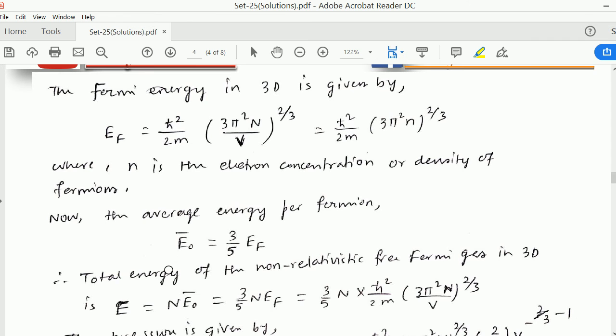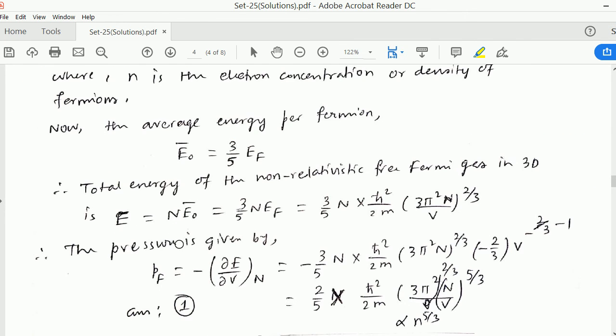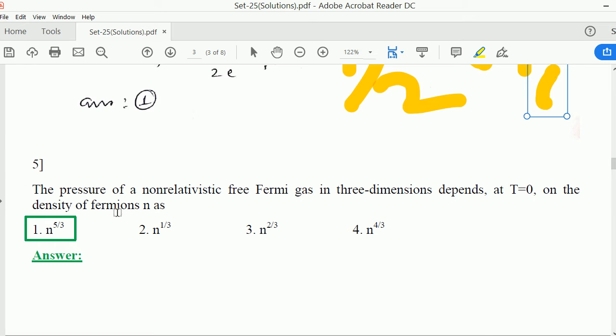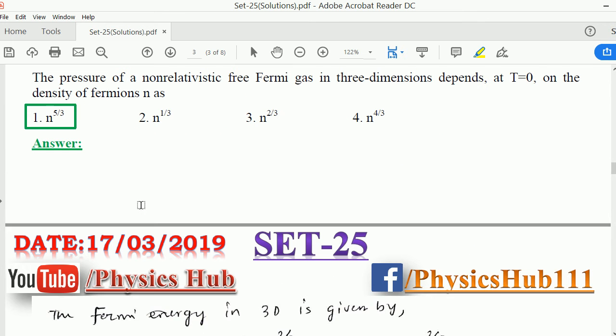Where N is the electron concentration, we consider it as density of fermions. The average energy for fermions at zero temperature is 3/5 times EF. Then the total energy is N times 3/5 EF. Pressure is given by minus del U by del V at constant N. We take the derivative with respect to V and we see a dependence of (N/V) to the power 5/3. So pressure is proportional to N to the power 5/3, matching with option 1.